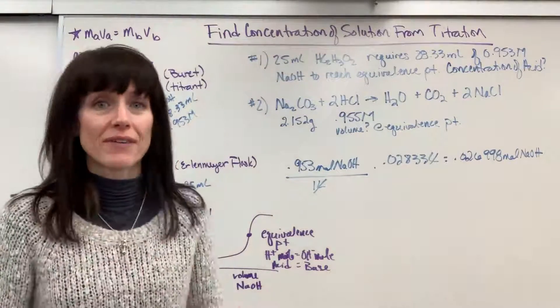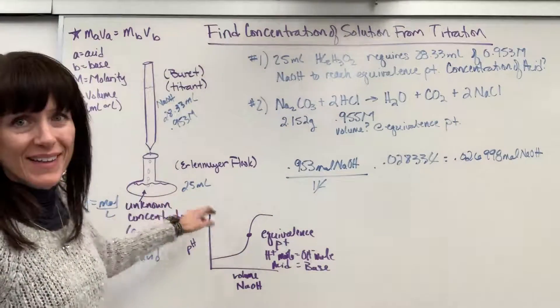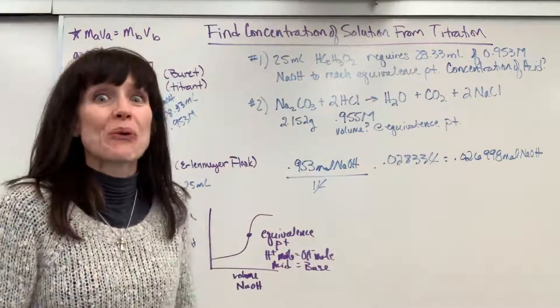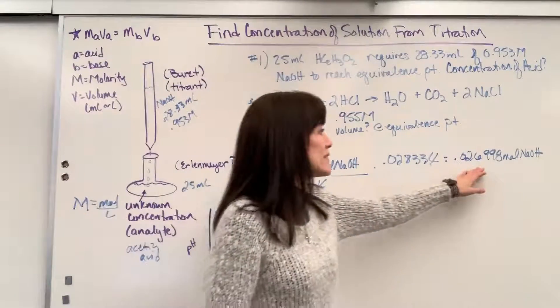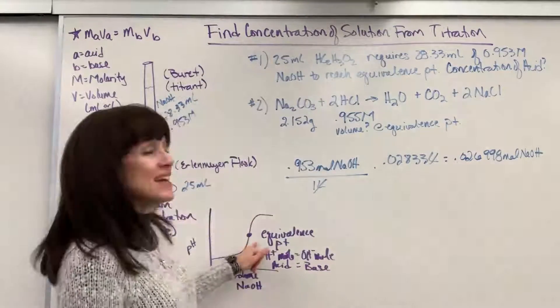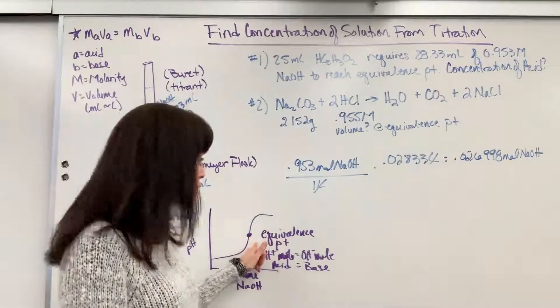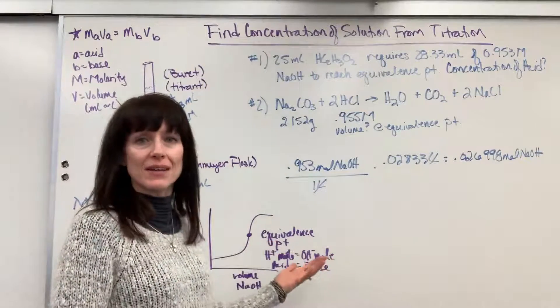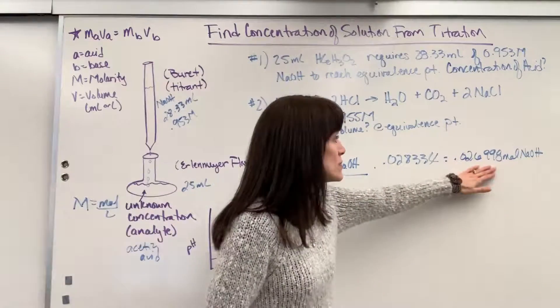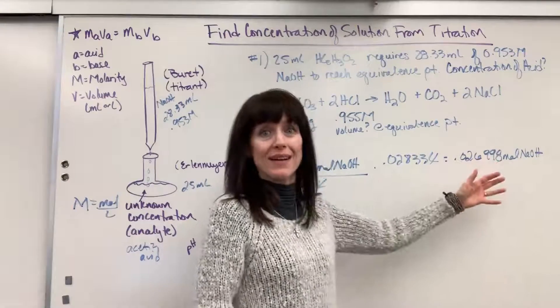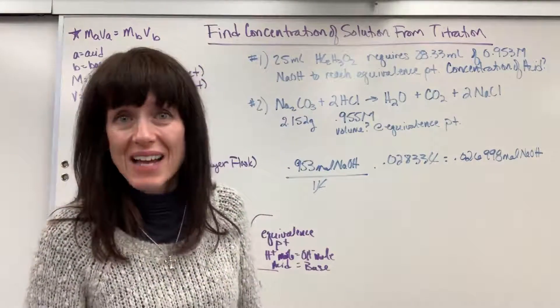So when we do that, when we do that, it is 0.026998 moles of the NaOH, that many moles of the NaOH. But I want to find concentration of the acid. Prepare yourself. This is so cool. The moles of the base equal the moles of the acid at the equivalence point. So this is moles of sodium hydroxide. Guess what? It's also the moles of the acetic acid.